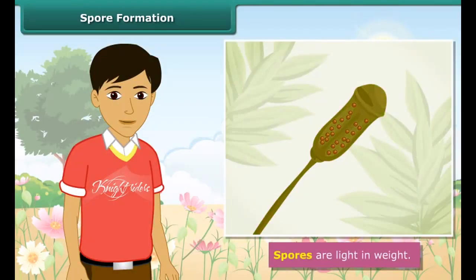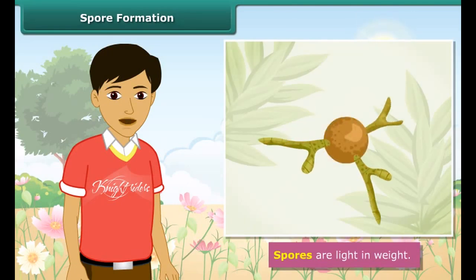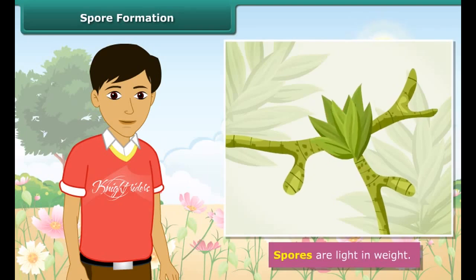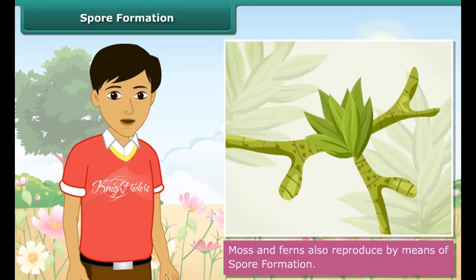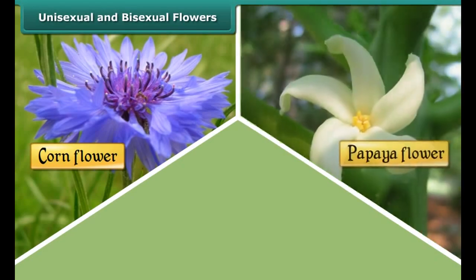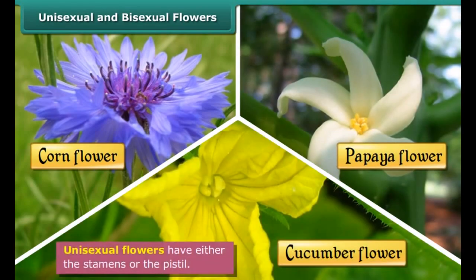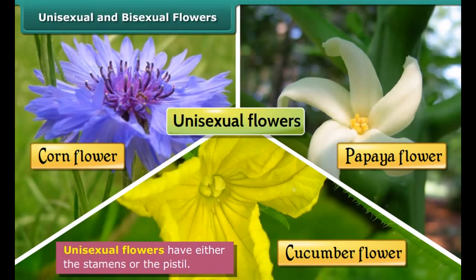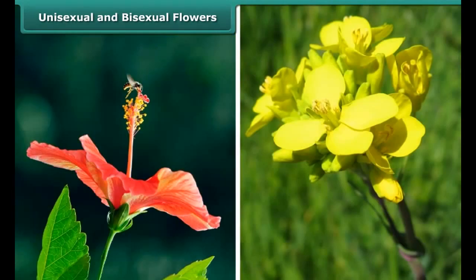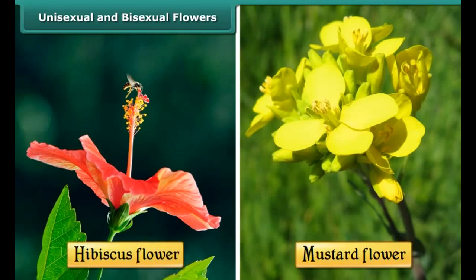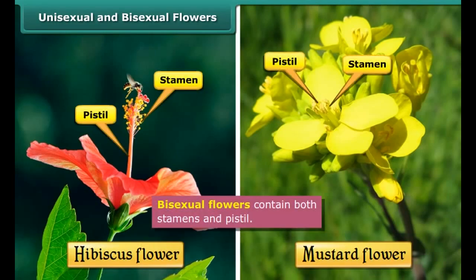Spore formation. What happens if we keep a piece of bread in warm conditions for a few days? We will notice blue-green fungus grown on it. Fungus grows from spores present in the air. Spores are light in weight, so they keep floating in the air. Under suitable conditions, they germinate and develop into new individuals. Plants such as moss and ferns also reproduce by means of spore formation.